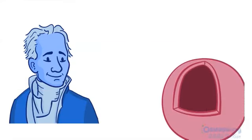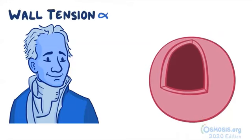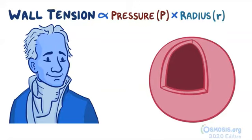According to the Law of Laplace, wall tension is proportional to pressure P times radius R. Now let's break it down.